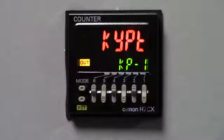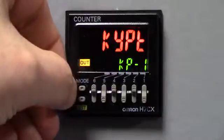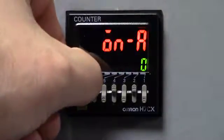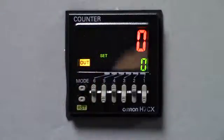So that is the setup of the H7CX-N. So we are going to press the mode key and go back to our main screen. Press and hold the mode key for three seconds. All right, so now we are back to the main screen. As you can see, we have zero process value, zero set value and we have the output light on.